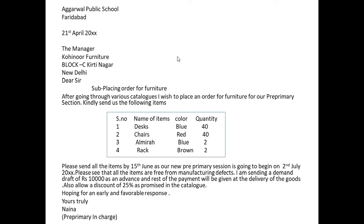You will start the letter writing: 'After going through various catalogues, I wish to place an order for furniture for the pre-primary section. Kindly send us the following items.' Then you will make a table with serial number, name of the item, color, and quantity. Color is included because we are ordering furniture for the pre-primary section.